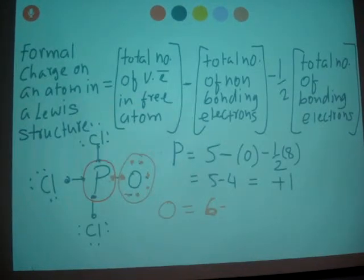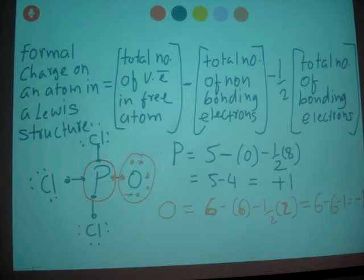Okay, for non-bonding electrons, it is 1, 2, 3, 4, 5, 6, right? Minus one half bonding electrons, which is 2. So when you calculate 6 minus 6 minus 1, you get negative 1 for oxygen.